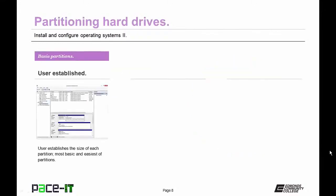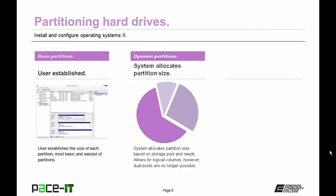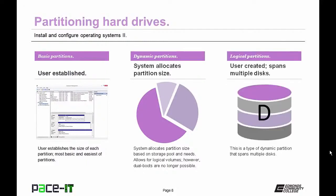There are three basic types of partitions. The basic partition is where the user establishes it — the user sets the size, and it is the most basic and easiest. Then there's the dynamic partition, where you allow the operating system to decide how much space is needed; it can increase and decrease as needs arise. Then there is a logical partition, which spans multiple disks — this is a type of dynamic partition.